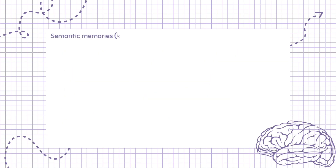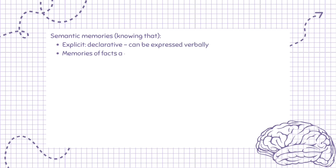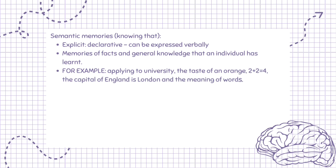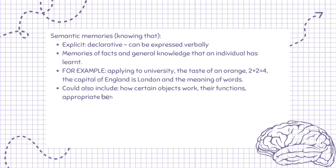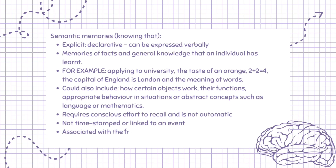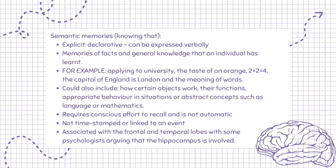Semantic memory — knowing that. Explicit, declarative, can be expressed verbally. Memories of facts and general knowledge that an individual has learnt. For example: applying to university, the taste of an orange, 2 plus 2 equals 4, the capital of England is London, and the meaning of words. Could also include how certain objects work, their functions, appropriate behaviour in situations, or abstract concepts such as language or mathematics. Requires conscious effort to recall and is not automatic. Not time-stamped or linked to an event. Associated with the frontal and temporal lobes, with some psychologists arguing that the hippocampus is involved.